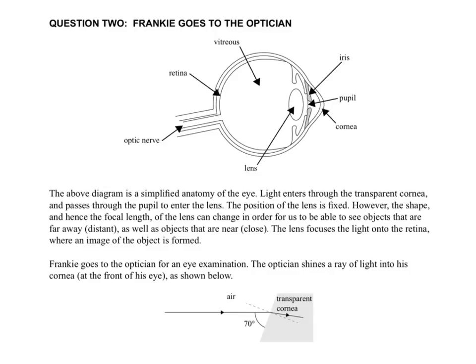Question 2: Frankie goes to the optician. The above diagram is a simplified anatomy of the eye. Light enters through the transparent cornea at the front and passes through the pupil to then to the lens. The position of the lens is fixed, however the shape and hence the focal length of the lens can change in order for us to be able to see objects that are far away distant as well as objects that are near close. The lens focuses the light onto the retina where an image of the object is formed. Frankie goes to the optician for an eye examination. The optician shines a ray of light into his cornea at the front of his eye as shown below.